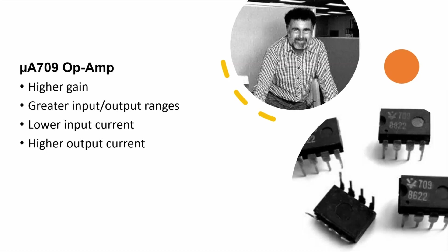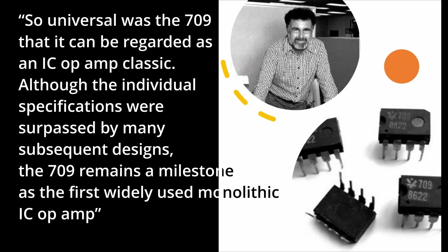The op-amp applications book from Analog.com says, so universal was the 709 that it can be regarded as an IC op-amp classic. Although the individual specifications were surpassed by many subsequent designs, the 709 remains a milestone as the first widely used monolithic IC op-amp.